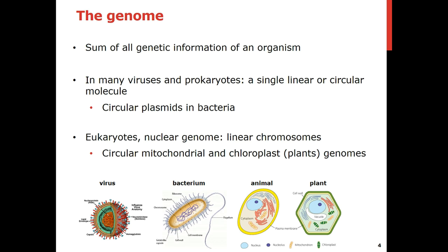The genome is the sum of all genetic information of an organism, and in many viruses and prokaryotes this consists of a single linear or circular molecule. In eukaryotes we can find linear chromosomes, and in addition, circular mitochondrial and, in the case of plants, chloroplast genomes.